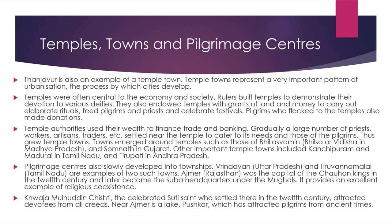Towns emerged around temples such as Vidisha in Madhya Pradesh and Somnath in Gujarat. Important temple towns included Kanchipuram and Madurai in Tamil Nadu and Tirupati in Andhra Pradesh. Pilgrimage centres also slowly developed into townships — Vrindavan in Uttar Pradesh and Tiruvannamalai in Tamil Nadu are examples. Ajmer in Rajasthan was the capital of the Chauhan kings in the 12th century and later became a Suba headquarters under the Mughals, providing an excellent example of religious coexistence. Khwaja Moinuddin Chishti, the celebrated Sufi saint who settled there in the 12th century, attracted devotees from all creeds. Near Ajmer is lake Pushkar, which attracted pilgrims from ancient times.